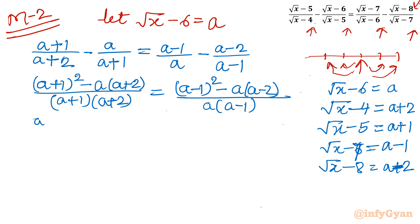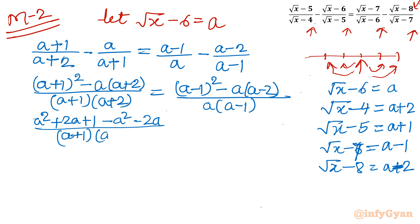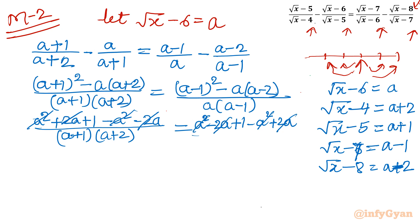Expanding the left numerator: a² + 2a + 1 − a² − 2a = 1. Similarly the right numerator: a² − 2a + 1 − a² + 2a = 1. So we get 1 over (a + 1)(a + 2) equals 1 over a(a − 1).